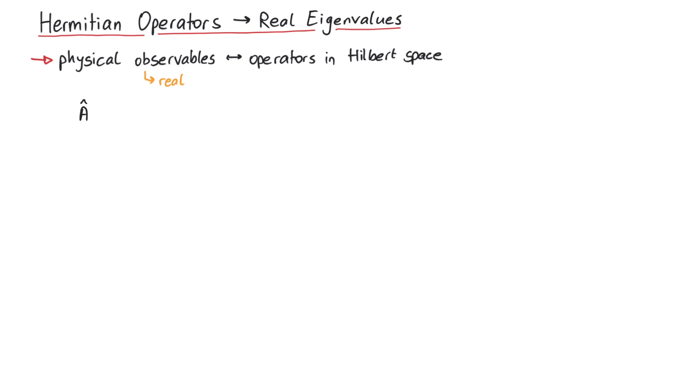We assume that the state psi is an eigenvector of the operator a with corresponding eigenvalue lowercase a. We also assume that a is Hermitian, so a dagger is the same as a.